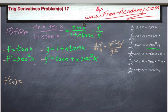f prime of x is equal to g, which is 1 plus x tangent of x, times f prime, which is secant squared of x. This is minus f, which is tangent of x,